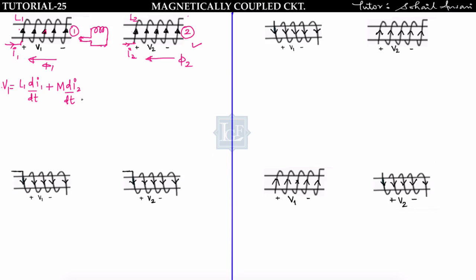So we can write V1 = L1 di1/dt + M di2/dt, where i2 is the current flowing in coil two. We replace this inductor by its equivalent circuit: inductor L1 connected with one dependent source whose polarity aids the total voltage, with value M di2/dt. This gives V1 = L1 di1/dt + M di2/dt. So we replace the magnetically coupled circuit by its equivalent — L1 inductor connected with a dependent source of value M di2/dt.